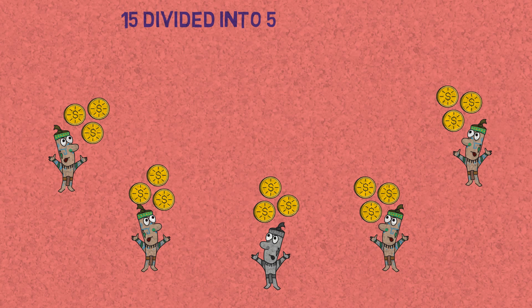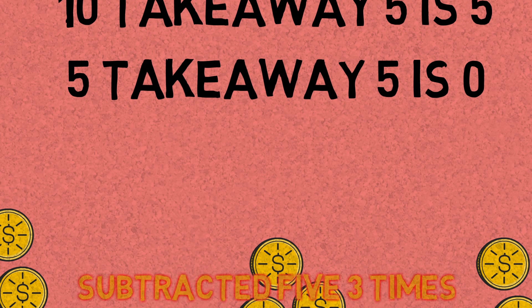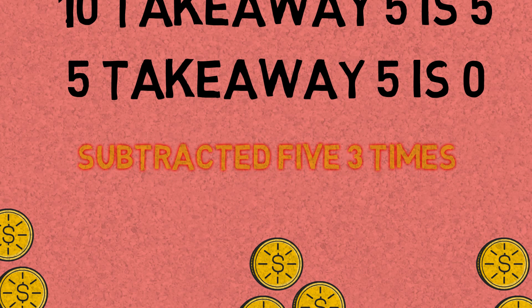15 divided into 5 is 15 take away 5, which leaves us with 10, and then 10 take away 5, which is 5, and then 5 take away 5, which is 0. So we could subtract 5 three times.